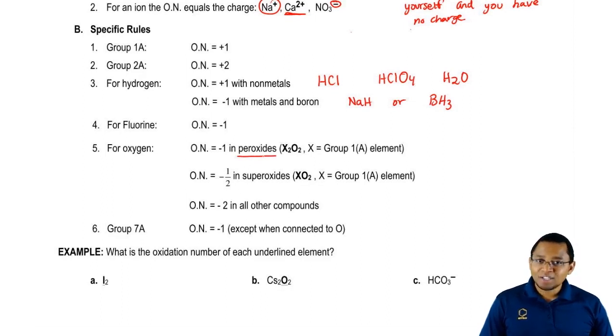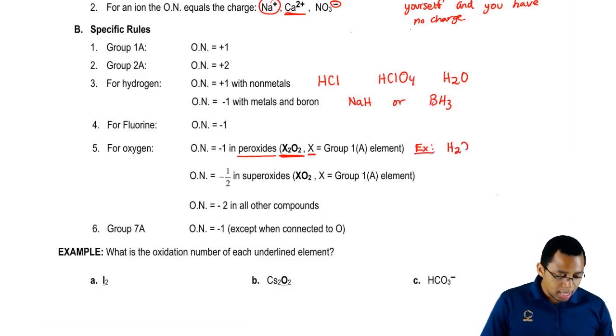Now what exactly is a peroxide? A peroxide has the formula X2O2, where X equals a group 1A element. So hydrogen, lithium, potassium, all those are group 1A metals. A good example here, you could have hydrogen peroxide or sodium peroxide. Both are peroxides because both have the formula X2O2. In this case, oxygen would be minus one.